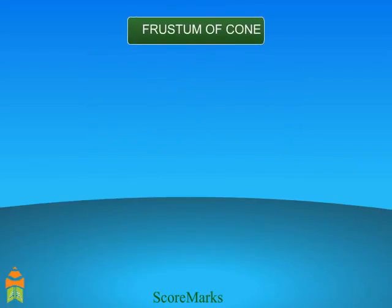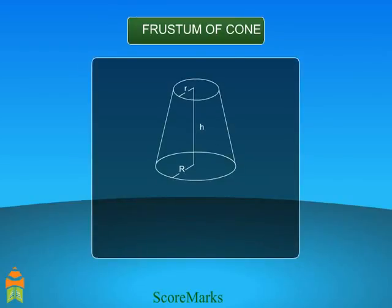We obtain a frustum when we cut a cone parallel to its base. The result of such cutting are a small cone and a frustum of a cone. The frustum looks very similar to a bucket.